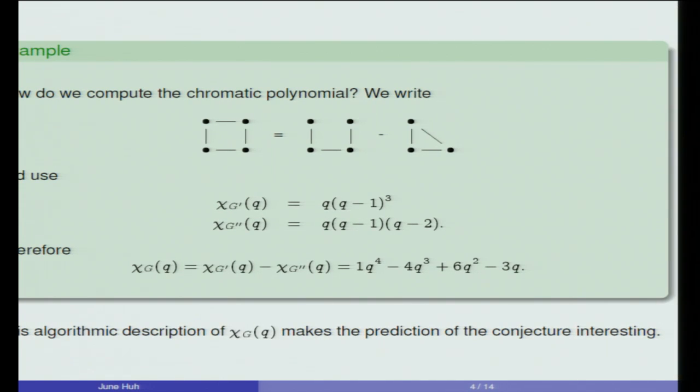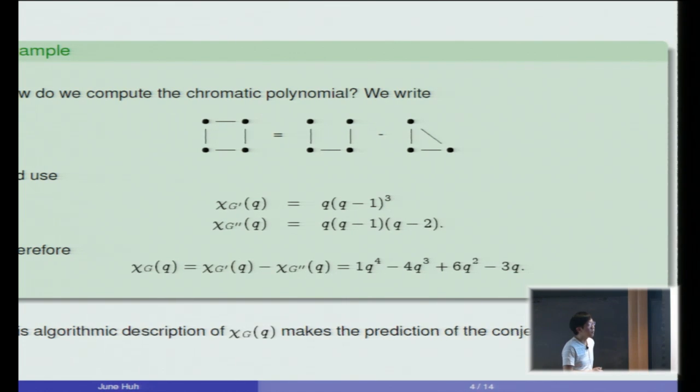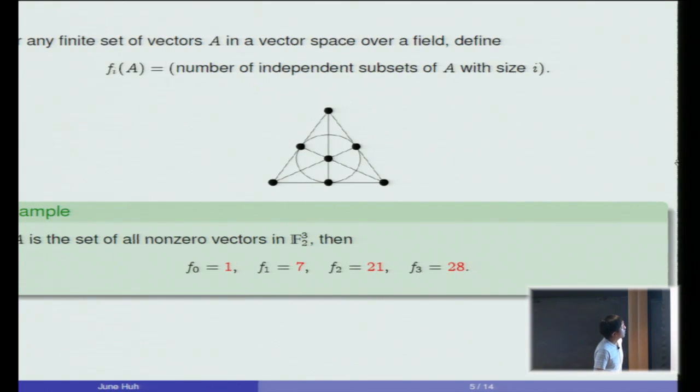But this algorithmic description or definition of the chromatic polynomial makes the prediction of the previous conjecture rather interesting, because if you have a sequence of integers which satisfy that log-concavity inequality, and if you add or subtract two such sequences, in general the sequence you get will no longer satisfy that quadratic inequality. So this defining recursion makes the prediction of the conjecture quite interesting.